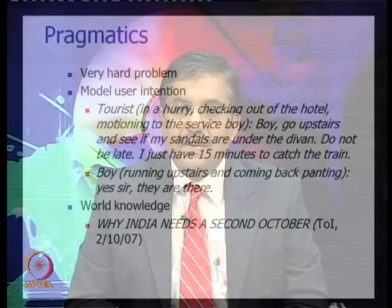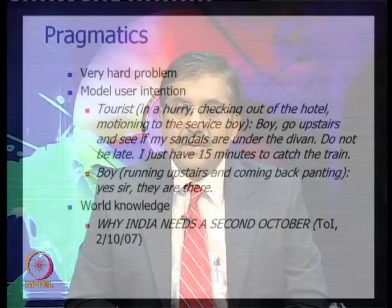Proceeding further, we come to pragmatics. What we saw was semantic role labeling — processing of semantics. When we come to pragmatics, we are concerned with how a sentence is processed by a user: when a speaker utters a sentence, when a listener listens to that sentence — how an information giver and information recipient look at the sentence. This is a very hard problem known to be very hard in natural language processing.